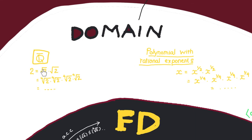For example, in Q̄ we can keep factoring 2 into square root of 2 times square root of 2, then smaller powers, and keep going on and on — it never stops. So we never have a factorization into irreducibles; we don't even have irreducibles in Q̄. The same thing happens with the ring of polynomials with rational exponents.